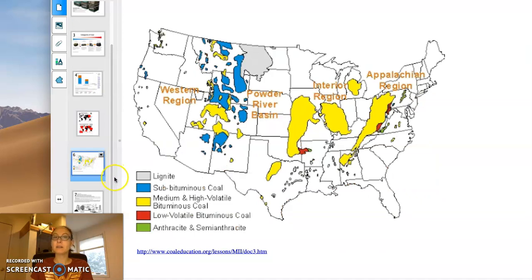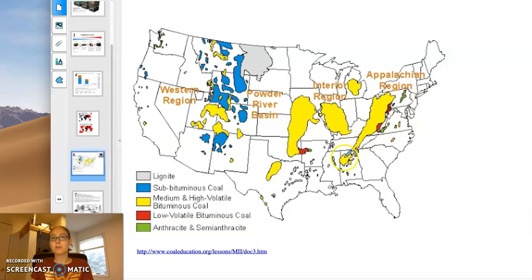Within the US, we have several regions that are major coal producers. You may be familiar with the Appalachian Mountains. We have some pockets of anthracite in Pennsylvania and West Virginia. The yellow on the map represents bituminous coal, which is the most abundant and is used for so much of our coal-fired electricity generation.